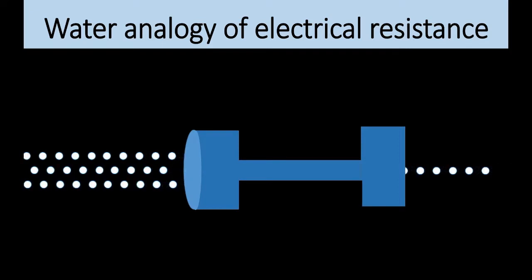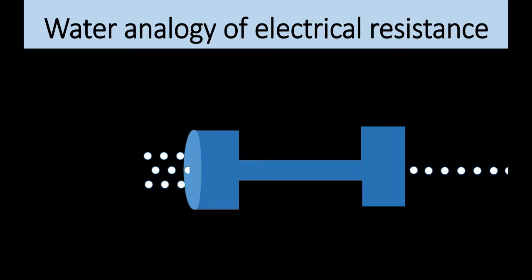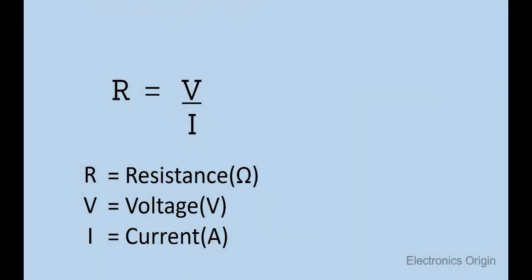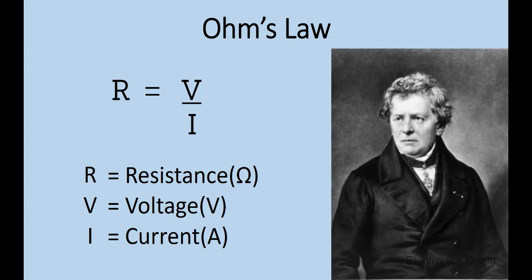Here a voltage drop is created. The relation between the electrical current, voltage and resistance is described by Ohm's law. Mr. Ohm was a German scientist that discovered in 1827 that electrical resistance is equal to voltage divided over current.